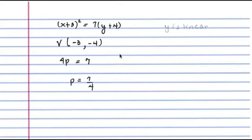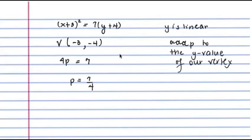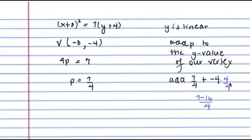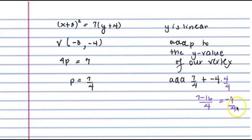Because the y is linear, we're going to add p to the y value of our vertex. We add 7 fourths to the y value of negative 4. Multiplying negative 4 by 4 gives negative 16, and negative 16 plus 7 gives negative 9, so we have negative 9 fourths. Our focus is going to have the same x value as the vertex — negative 3 — but the y value changes to negative 9 fourths. So the focus is negative 3, negative 9 fourths.